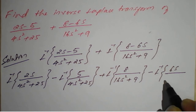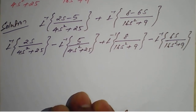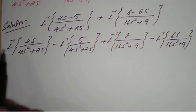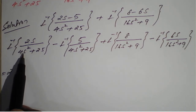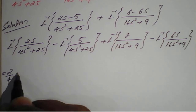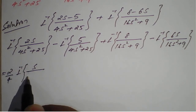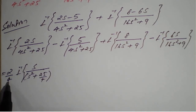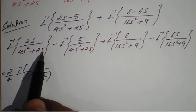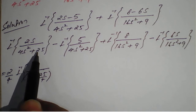We have separated the terms and will rearrange and apply standard formulas. The constant 2 is kept outside. Since the coefficient of s² must be 1, we take 4 as common from the denominator. So the first term becomes (2/4) · L⁻¹{s/(s² + 25/4)}, since factoring out 4 gives 4s² + 25 = 4(s² + 25/4).